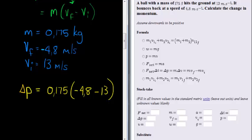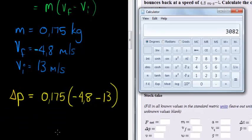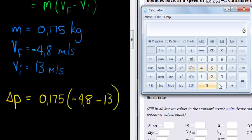And let's see what do we get? So we get 0.175 times, and then in our brackets, let's put 4.8, that has a negative, minus 13. Close our brackets.